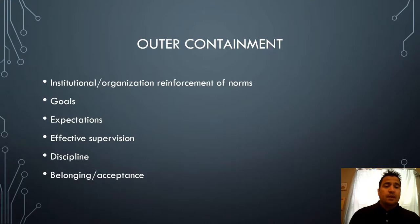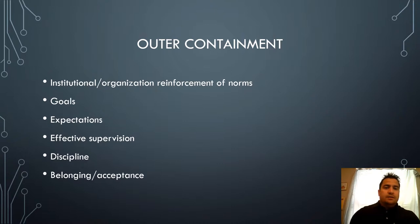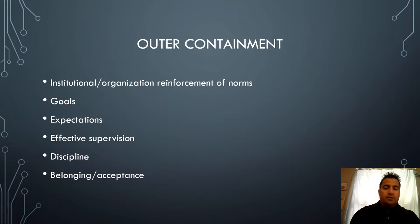Outer containment has to do with the environment around you. That includes institutional reinforcement of norms — so in the business world, how is the culture you are working in? How tied are they to cultural norms? Are they doing business the right way? Are they dumping toxic waste illegally into the ocean, or like Enron, engaging in improper bookkeeping and hiding of debt? Are they committing fraud? Are these things allowed in that culture, or are they ruled out and spelled out in company policies?